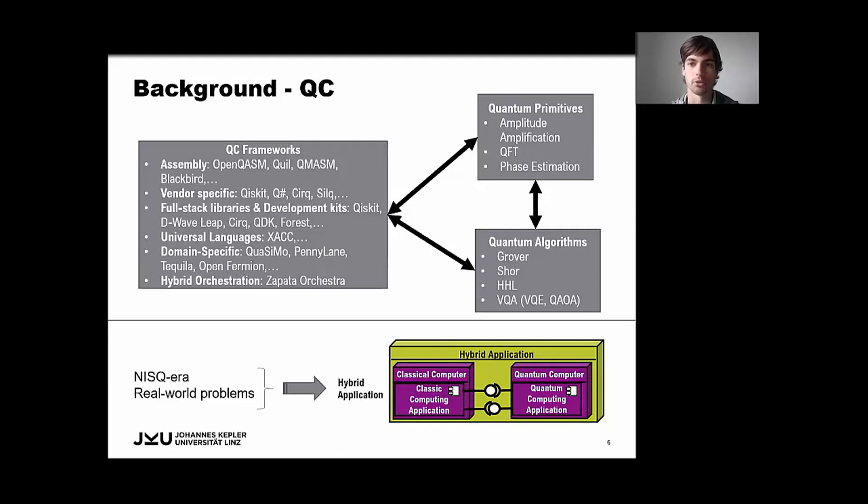And a similar thing holds true for the quantum algorithms, like Grover-Shor, HHL, or the variational quantum algorithms, with the VQE and QAOA as the most prominent ones. And these additionally may utilize one or several quantum primitives within the algorithm.